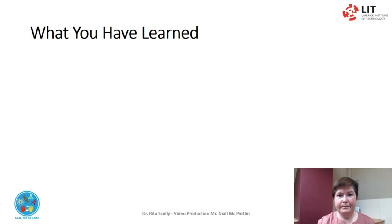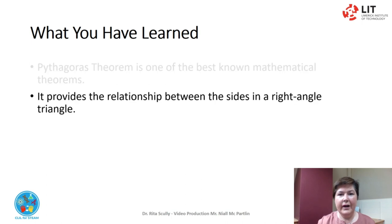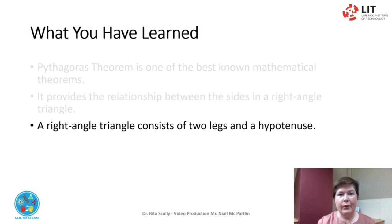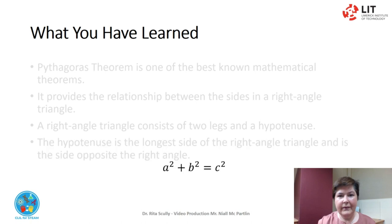What you have learned. The Pythagoras Theorem is the best known mathematical theorem. It provides the relationship between the sides in a right-angled triangle. A right-angled triangle consists of two legs and a hypotenuse. The hypotenuse is the longest side and is the side opposite the right angle. A squared plus B squared equals C squared. It is stated as: in a right-angled triangle, the square of the hypotenuse is equal to the sum of the squares of the other two sides.